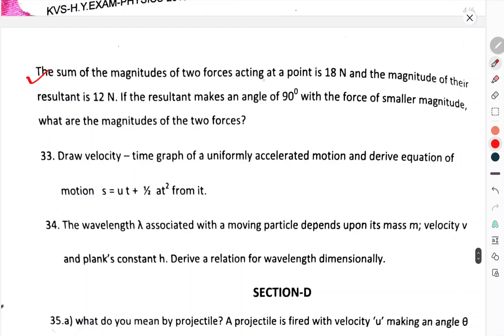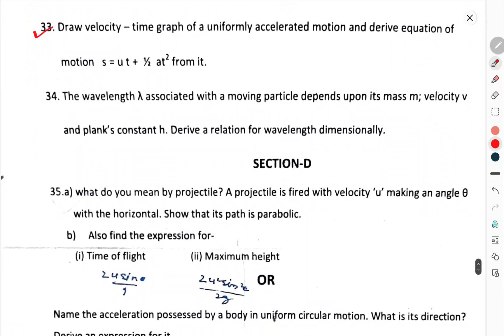State the parallelogram law of vector addition. Two vectors A and B are inclined to each other at angle theta. Using parallelogram law of vector addition find its magnitude and direction of the resultant. Or the sum of magnitude of two forces acting at a point is 80 N. Magnitude of the resultant is 12 N. If the resultant makes an angle 90 degree with the force of smaller magnitude, what are the magnitudes of the two forces?